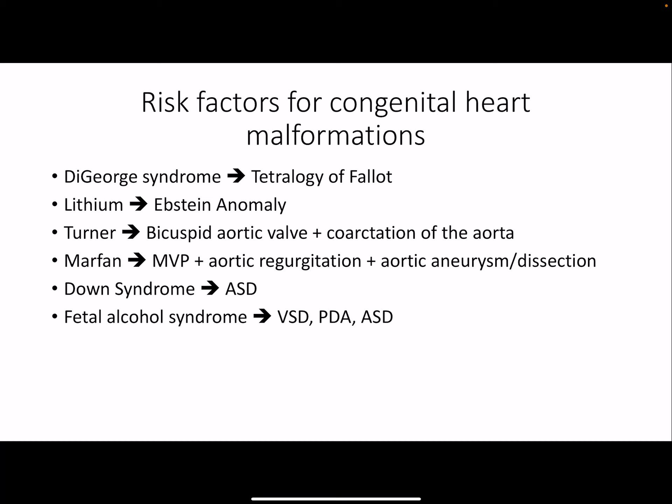A couple of risk factors and associations: DiGeorge syndrome leads to tetralogy of Fallot. Lithium exposure for bipolar disorder leads to Ebstein's anomaly. Turner syndrome is associated with bicuspid aortic valve, which can lead to coarctation of the aorta. Marfan syndrome leads to many issues including mitral valve prolapse, aortic regurgitation, and aortic aneurysm/dissection. Down syndrome leads to ASD. Fetal alcohol syndrome can lead to any of the acyanotic disorders.